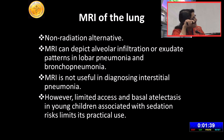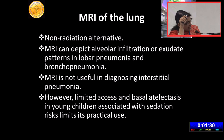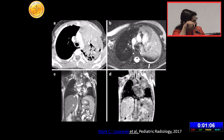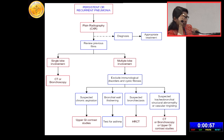There is an upcoming role of MRI of the lung as a non-radiation alternative. MRI can depict alveolar infiltration or exudative patterns in lobar and bronchopneumonia, but it is not useful in diagnosing interstitial pneumonia. Limited access and the need for sedation in children limits its practical use. On both CT and MRI the normal lung appears black, but consolidation shows increased signal intensity. On T2-weighted and T1-weighted images you can see left upper lobe consolidation similar to chest radiograph.